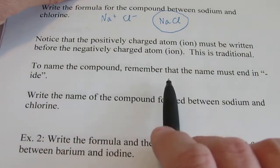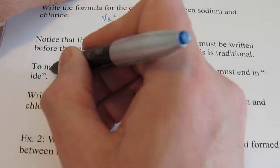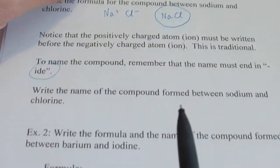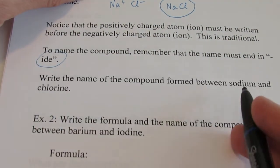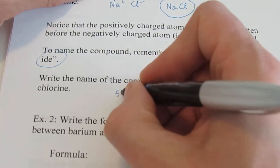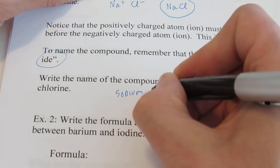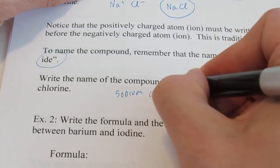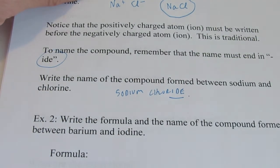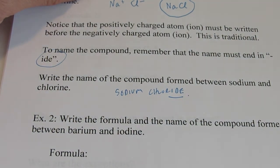Now, to name the compound, remember, the name must end in -ide because it's binary. It's only made up of two atoms. So the name of the compound between sodium and chlorine is sodium chloride. It's binary, so the name must end in -ide.